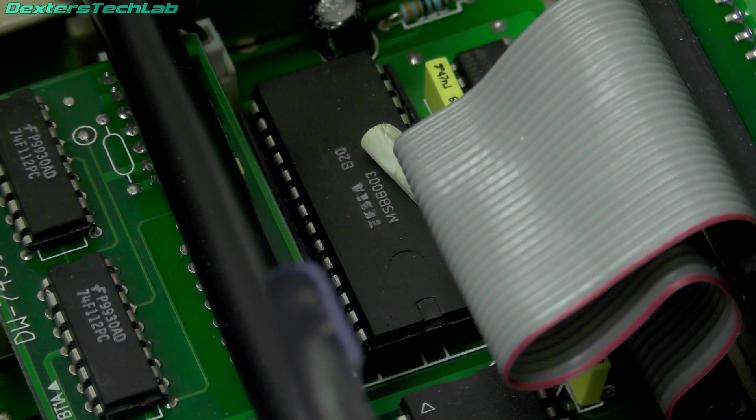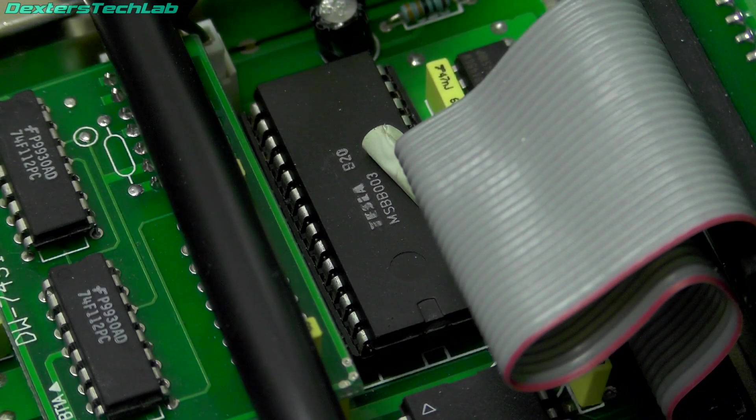And the other device is actually a Tesla branded IC. That is an MSBB003, no information on that on the internet so I'm not sure what that is.